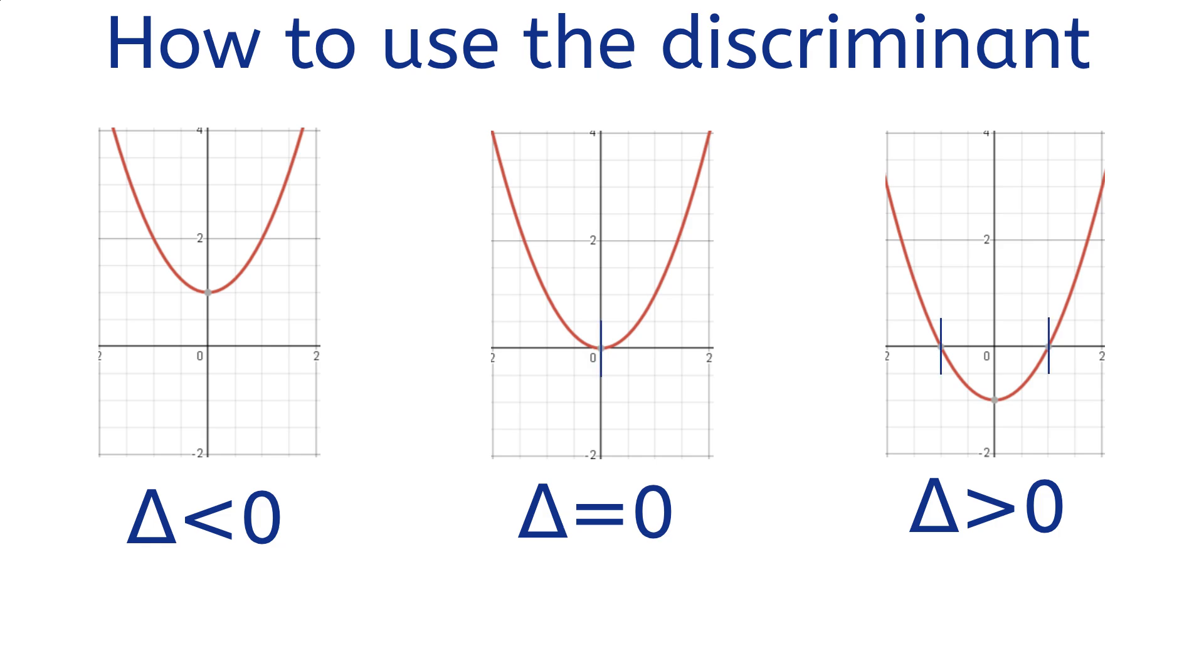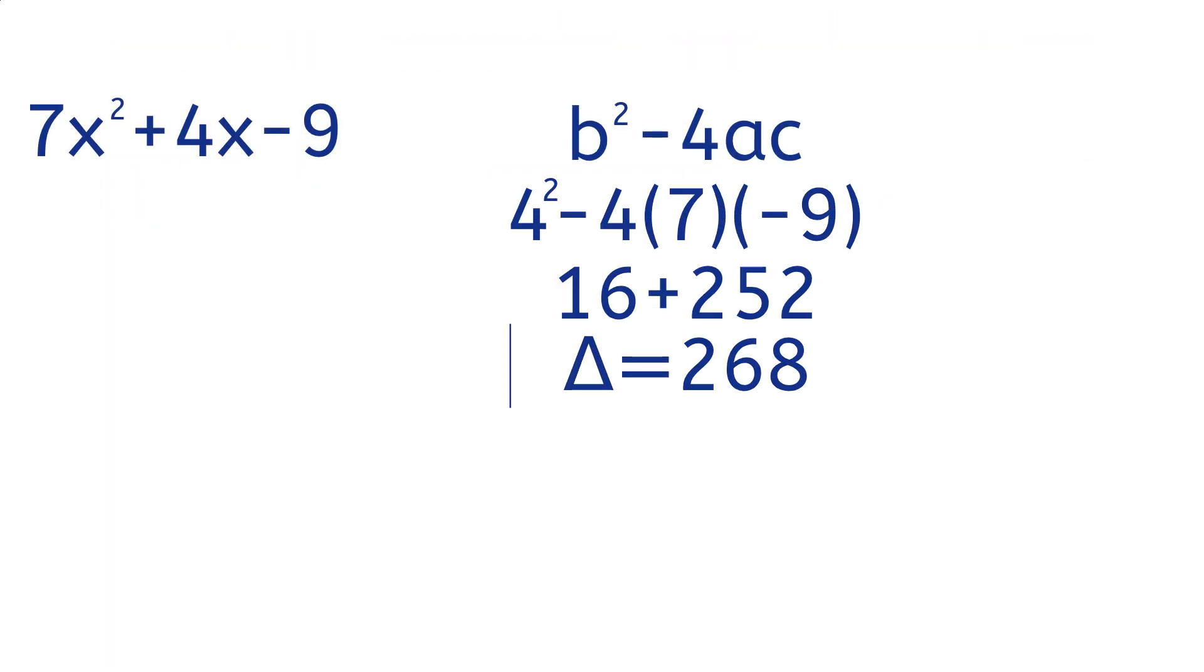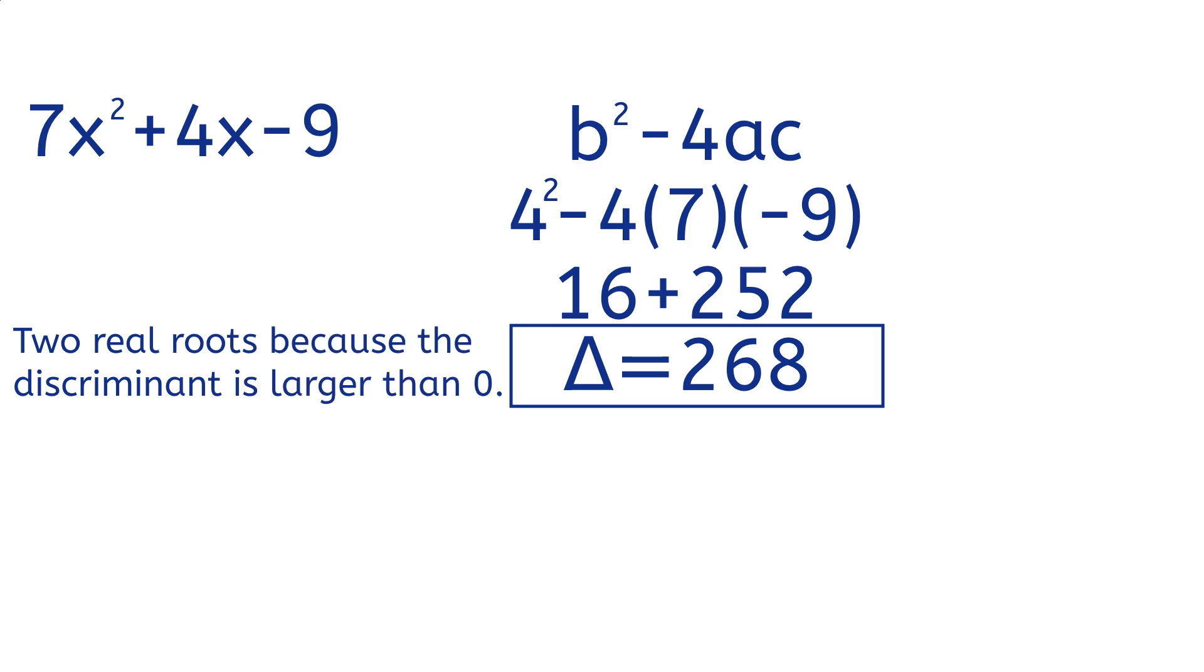Whenever the discriminant equals 0, the equation only has one real root. And finally, when the discriminant is less than 0, the equation has no real roots. Therefore, we know that the quadratic 7x squared plus 4x minus 9 has two real roots.